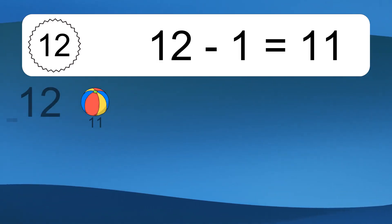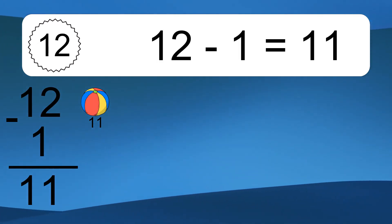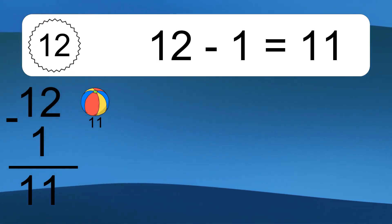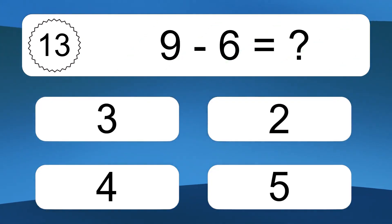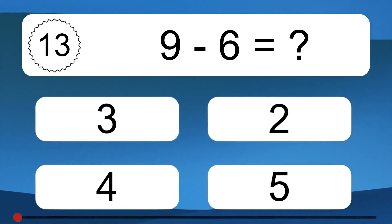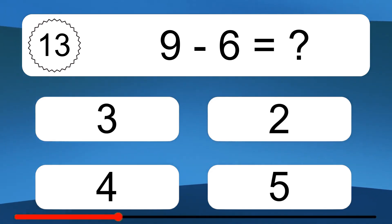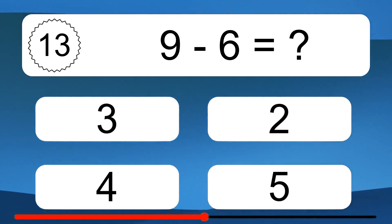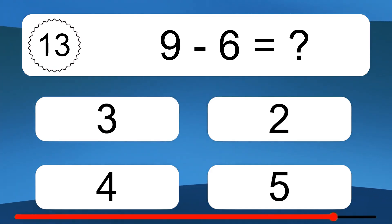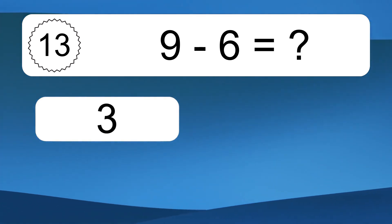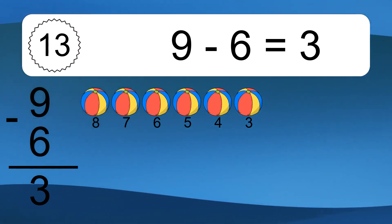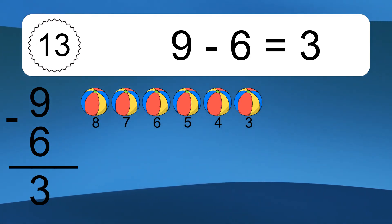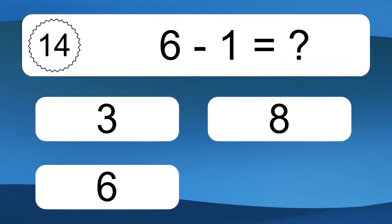12 minus 1 equals 11. Let's count it: 11. 9 minus 6 equals what? 9 minus 6 equals 3. Let's count it: 8, 7, 6, 5, 4, 3.